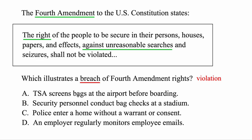The first choice: TSA screens bags at the airport before boarding. That happens all the time for the safety of people, to make sure bags don't have anything dangerous. That doesn't sound like a breach of your rights. The second: security personnel conduct bag checks at a stadium. Again, bag checks ensure people don't bring in guns or dangerous items — that's pretty reasonable. Both of those seem okay.